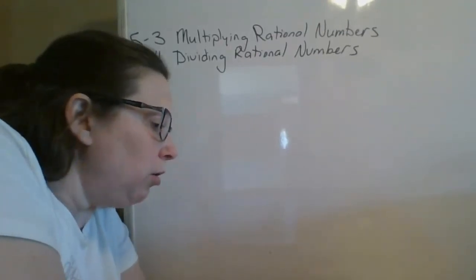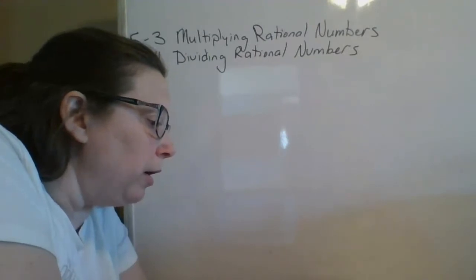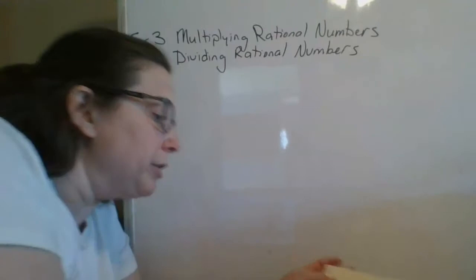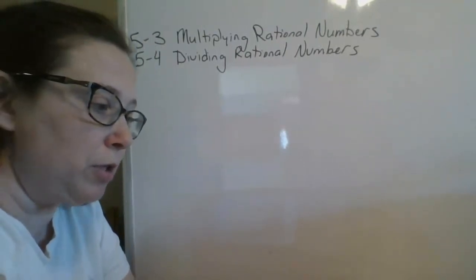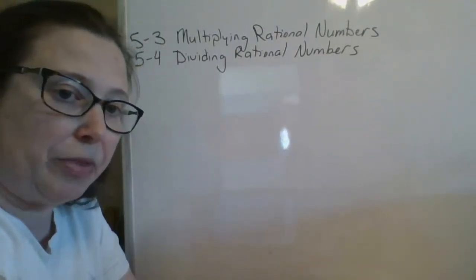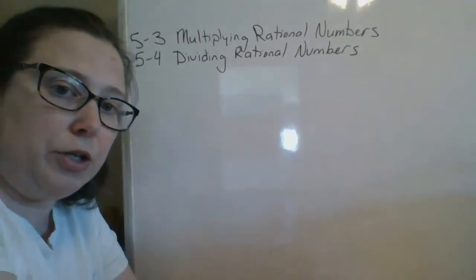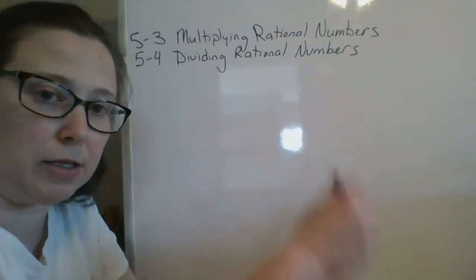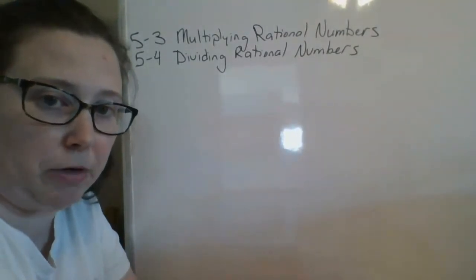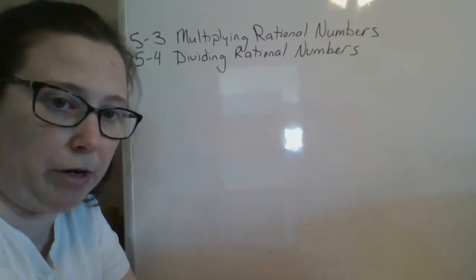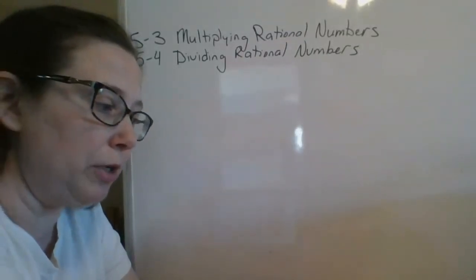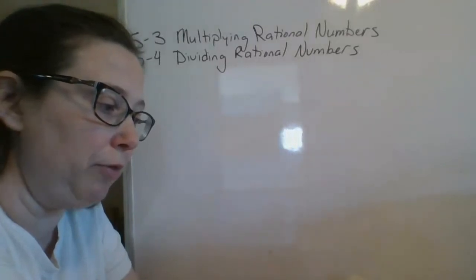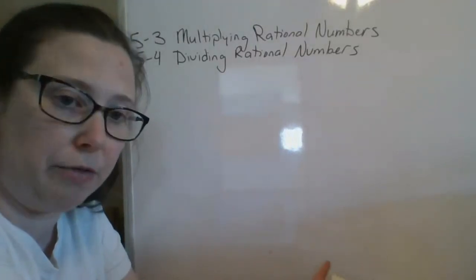The only vocab that I need you to worry about are multiplicative inverses and reciprocals. You can just make one heading that says 5-3 Multiplying Rational Numbers and 5-4 Dividing Rational Numbers. And the only vocab you need to do is multiplicative inverses and reciprocals.